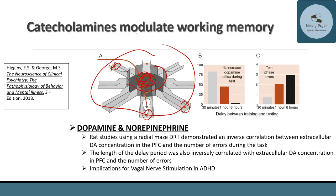If we can pair vagal nerve stimulation with a specific behavior, we could potentially promote attention to that behavior and drive brain plasticity. Vagal nerve stimulation is currently in clinical trials for post-stroke rehabilitation and tinnitus, and may be a future treatment for ADHD. Additionally, many medications used in ADHD involve stimulating or enhancing dopaminergic and noradrenergic tone in particular regions of the brain.